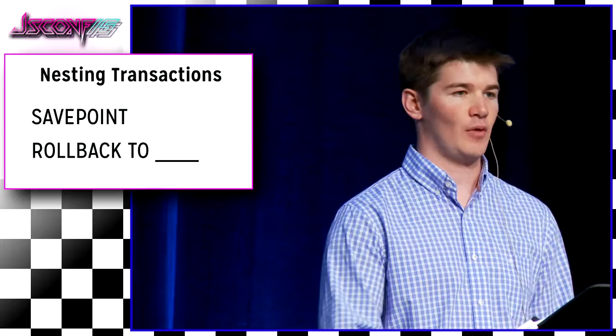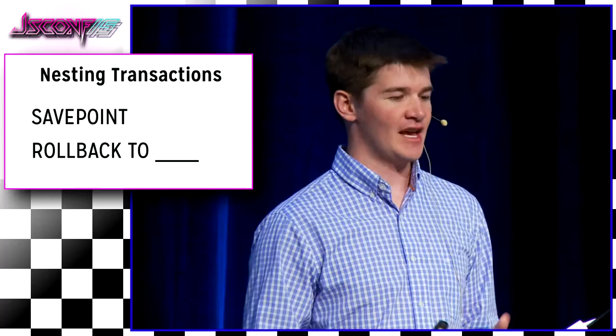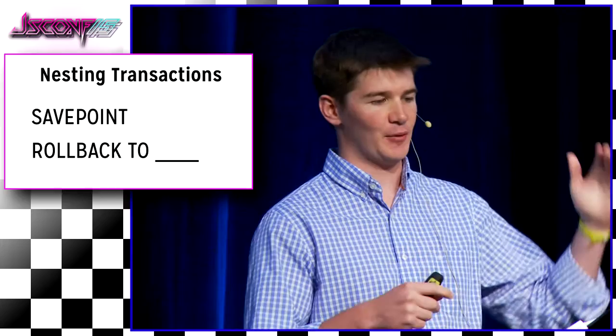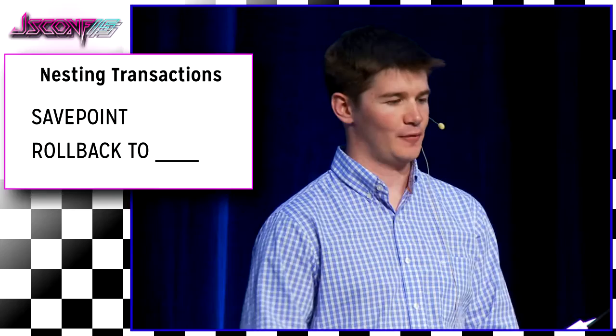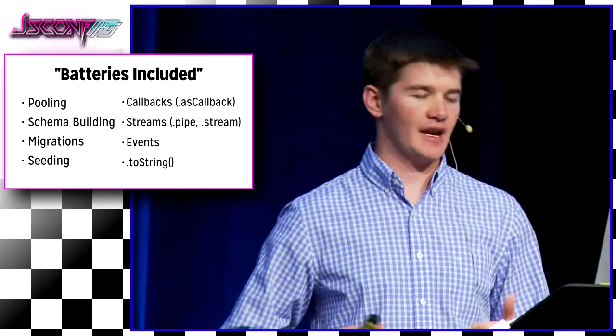Originally the API was that you would just have to pass the transaction object explicitly to every single query you built, and then call commit or rollback at the very end. But that seemed error-prone — users would forget to pass it to every single query necessary, and then they'd have queries not working on the same connection, causing all sorts of errors. So this is the new API. Knex tries to make it hard to screw up. We can return the promise into the transaction, and if the entire promise chain fulfills, the transaction is committed; if it fails, the transaction is rolled back.